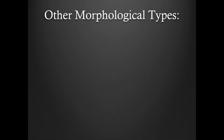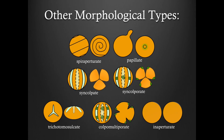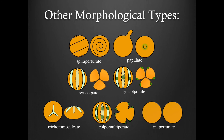Other morphological types. In addition to the morphological categories of porate, colpate, and colporate, there are also some other unique morphological types. Spira-aperturate refers to a pollen grain with one or more apertures that spiral in shape. Papillate refers to a small protrusion on the surface of the grain. Synculpate or synculporate refers to colpate or colporate grains that have colpi fused together at one or both poles. Trichotomosulcate refers to a grain with a three-armed aperture situated at one pole. Colpomultiporate refers to a grain that has two or more pores associated with a single culpus. And finally, inaperturate refers to a grain with no apertures.